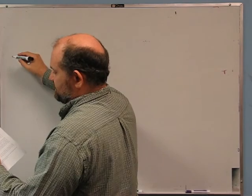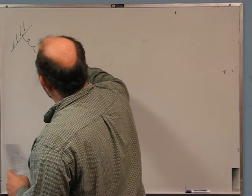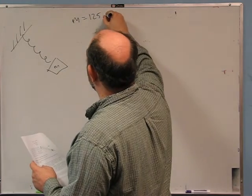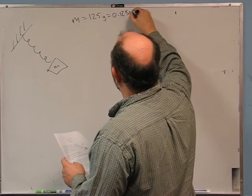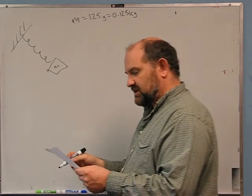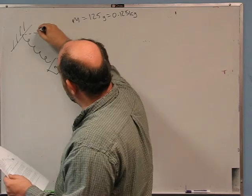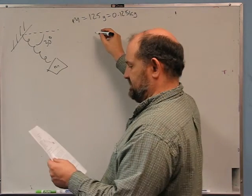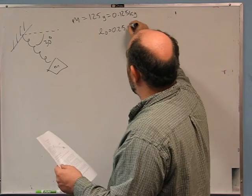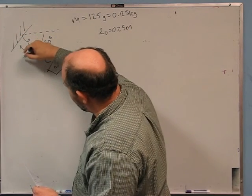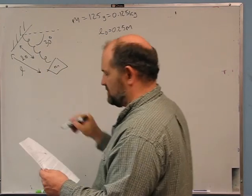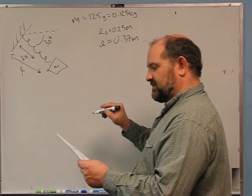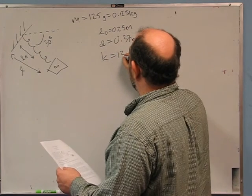A spring is fixed at one end. The other end is connected to a block of mass m, where m is 125 grams — I'll convert this right now to 0.125 kilograms, which is very important to do. The spring is constrained to stretch along a direction 30 degrees below the horizontal. The spring has equilibrium length L₀ = 0.25 meters, but is currently stretched to a longer length of 0.37 meters. The spring constant is 137 newtons per meter.